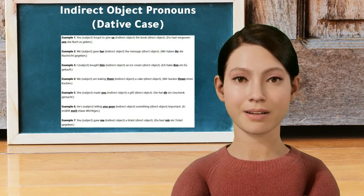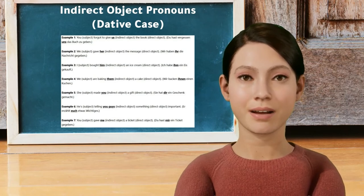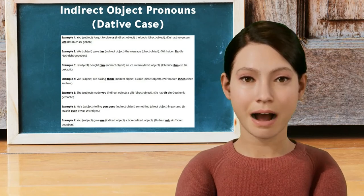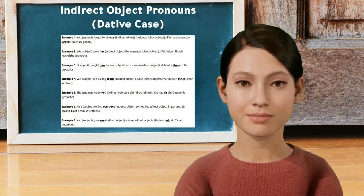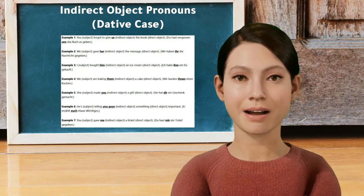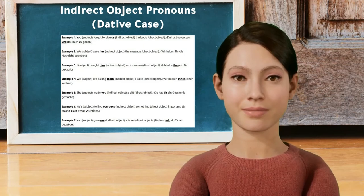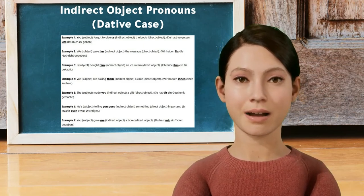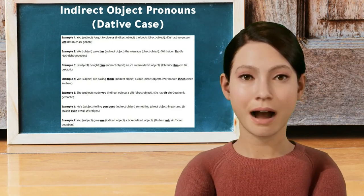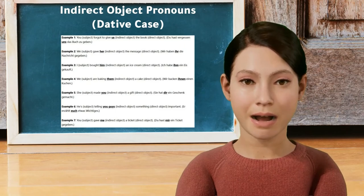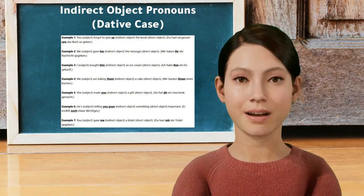'She' (subject) 'made you' (indirect object) 'a gift' (direct object) — Sie hat dir ein Geschenk gemacht. 'He's' (subject) 'telling you guys' (indirect object) 'something important' (direct object) — Er erzählt euch etwas Wichtiges. 'You' (subject) 'gave me' (indirect object) 'a ticket' (direct object) — Du hast mir ein Ticket gegeben.